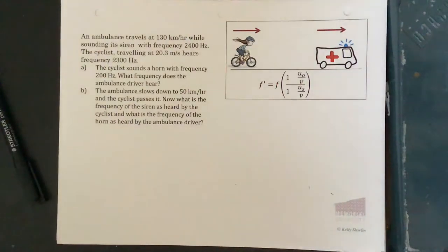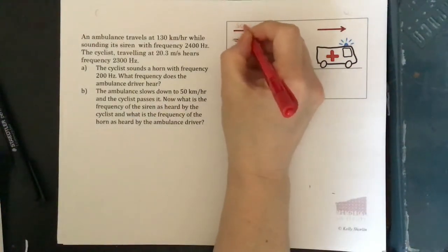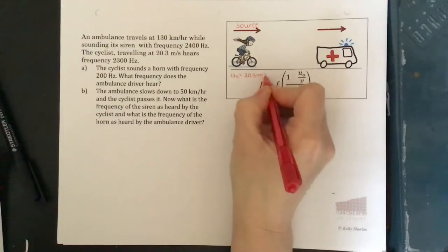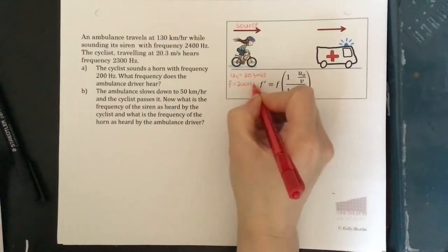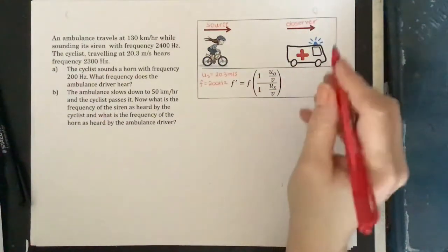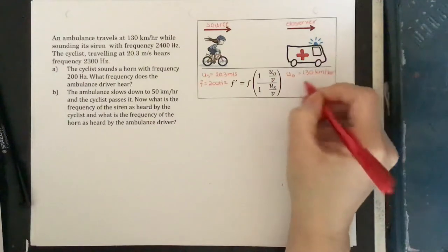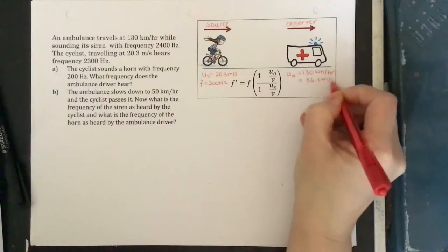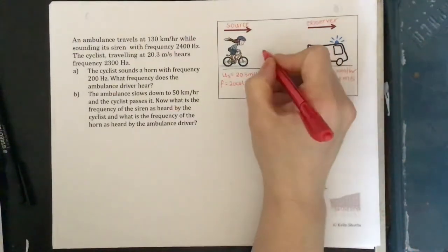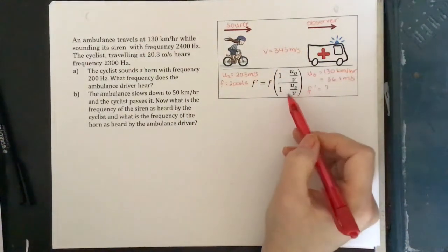This is a Doppler problem. Let's label our picture. The cyclist becomes the source, because the cyclist is emitting sound. The speed of the source is 20.3 meters per second, and the frequency of the sound emitted by the source is 200 hertz. The ambulance becomes the observer, because the ambulance driver is listening to the sound made by the cyclist. The ambulance driver is driving at 130 kilometers per hour, which converts to 36.1 meters per second. Sound in air travels at 343 meters per second.